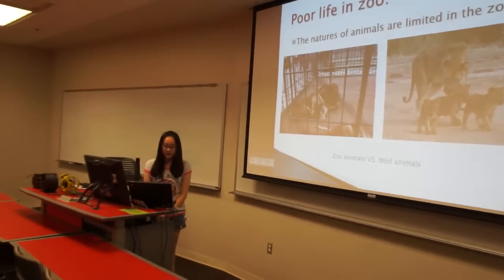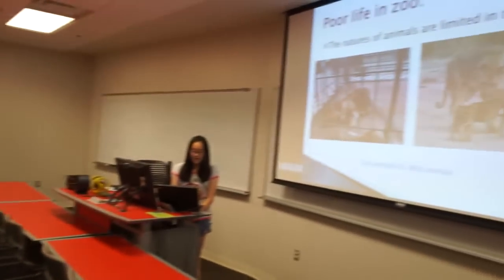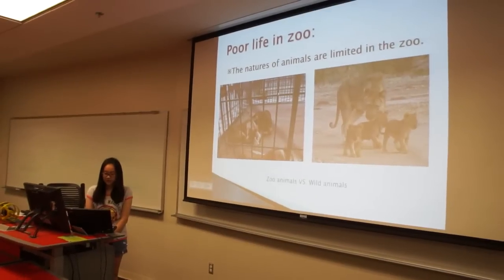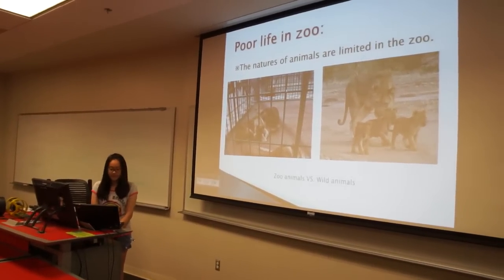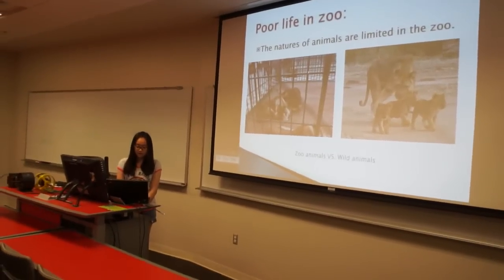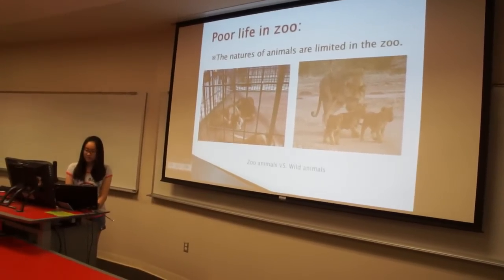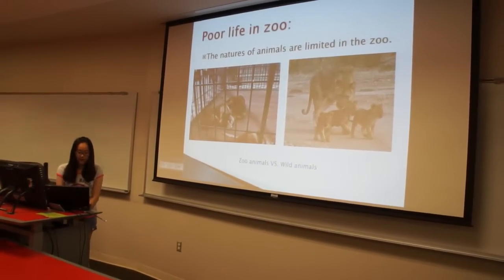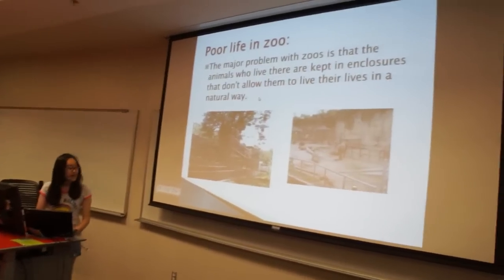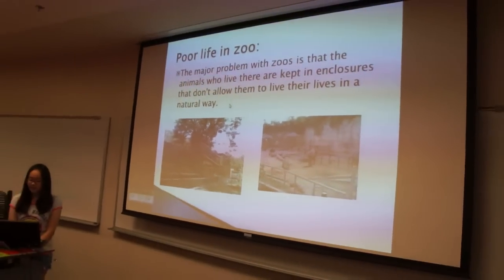They just stay in cages and cannot play with their companions, cannot walk around in the forest. For example, in zoos, elephants are usually kept chained or even isolated. Their enclosures are incredibly small compared to what they are used to in the wild. Elephants often show many signs of distress, like engaging in repeated movements. It's not surprising that elephants don't do well in zoos at all. The average lifespan of zoo elephants is about 16 to 18 years.